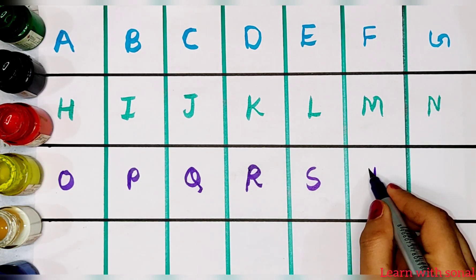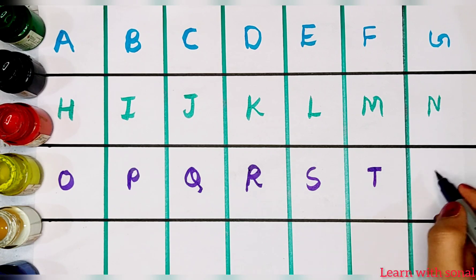S. S for sunflower. T. T for tree. U. U for umbrella.